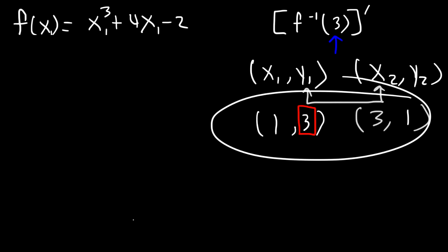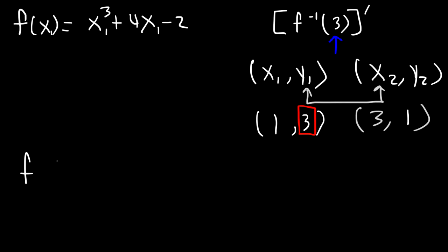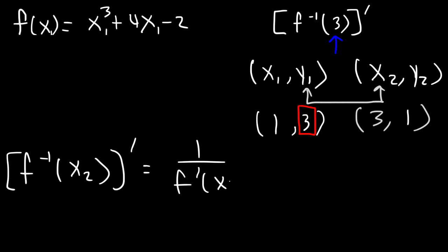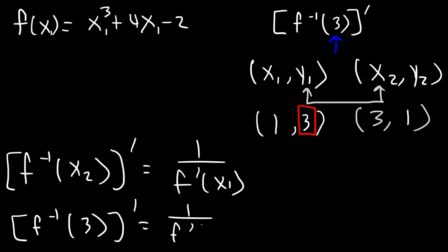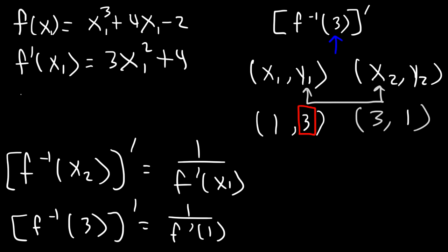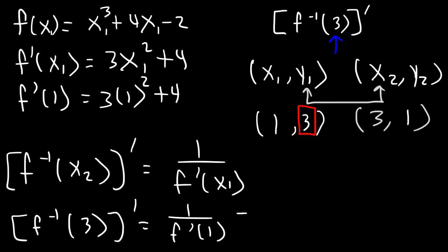Now that we have x1, we can apply the formula: the derivative of the inverse function equals 1 over f prime of x sub 1. Here x2 is 3 and x sub 1 is 1. f prime of x is 3x squared plus 4, so f prime of 1 is 3 times 1 squared plus 4, which is 7. So the answer is 1 over 7.